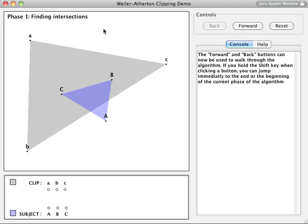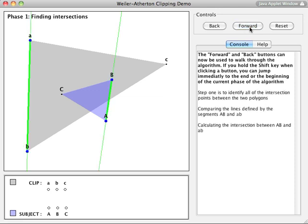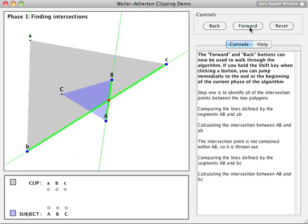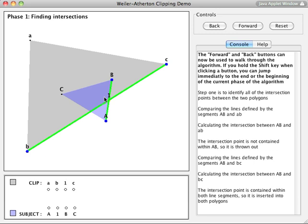The algorithm will now start to find intersections between the two polygons. We press the Forward button to trace the execution of the algorithm. The first intersection point has been found and added to both the clip and subject lists.